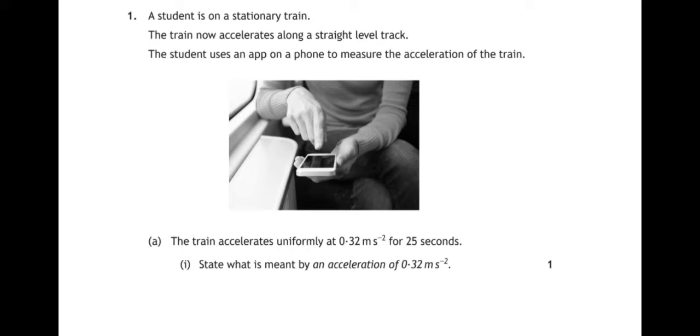Question number one. It says a student is on a stationary train. The train now accelerates along a straight level track. The student uses an app on a phone to measure the acceleration of the train.